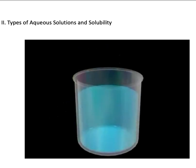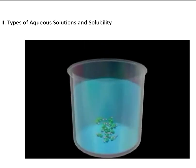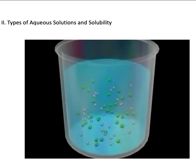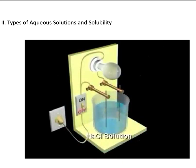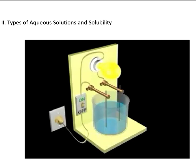When sodium chloride is dissolved in water, it forms a solution of separated sodium and chloride ions. The presence of ions in the solution is responsible for the fact that the solution is a conductor of electricity. Substances such as sodium chloride that exist in aqueous solution entirely or nearly entirely as ions are called strong electrolytes. By contrast, an aqueous solution of a non-electrolyte such as sugar does not conduct electricity.